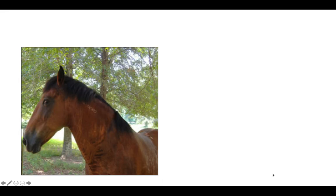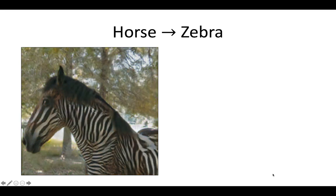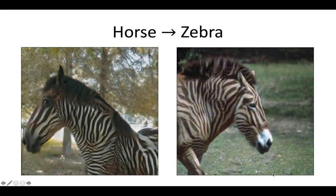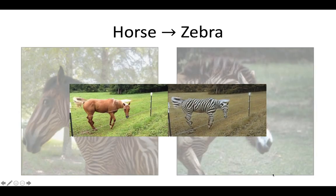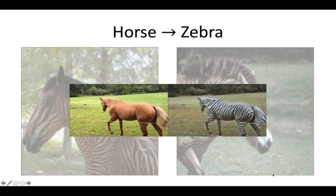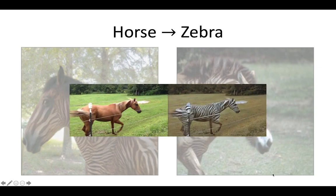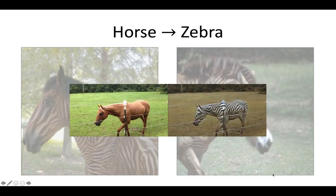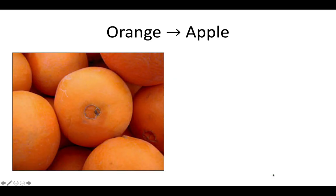Let's look at some results. CycleGAN can transform objects into visually similar objects, such as a horse to a zebra. Interestingly, since CycleGAN is an unsupervised method, it also changed the background to look more like an African savannah environment. We can apply the model to a video frame by frame — the result is not perfect and shows some flickering effects, but you can see a running horse become a zebra. We can also use CycleGAN to transform an orange into an apple.